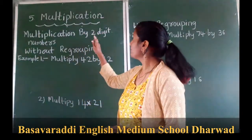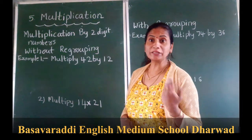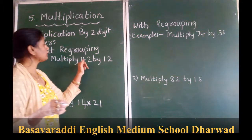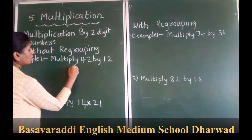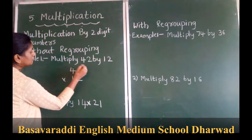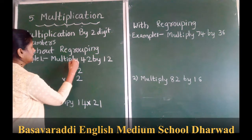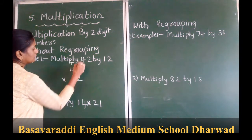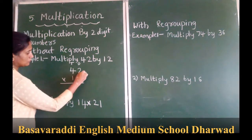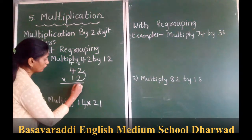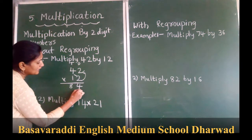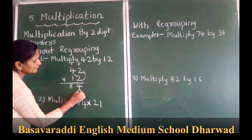Now we multiply by a 2-digit number without regrouping. The example is 42 multiplied by 12. This is hundreds, this is tens, and ones. First you multiply ones: 2 times 4 is 8. Now we are putting one space over, so we are putting 0.